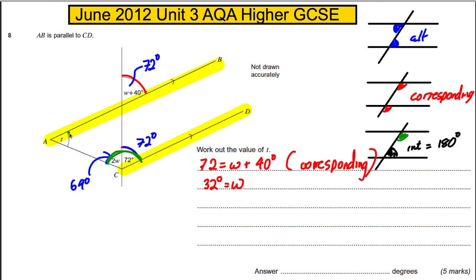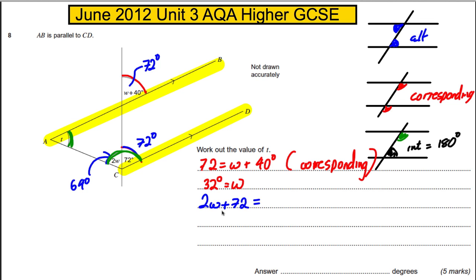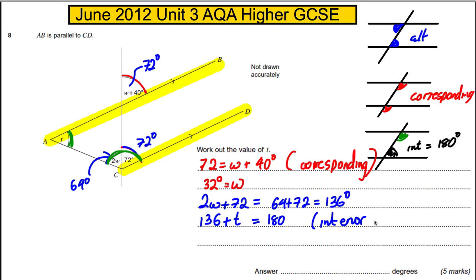For T, we know that interior angles must add up to 180 degrees. The whole angle is 2W, which is 64, plus 72, giving 136 degrees. So 136 plus T must equal 180. Therefore T equals 180 subtract 136, which is 44 degrees — and that gets us all five marks.